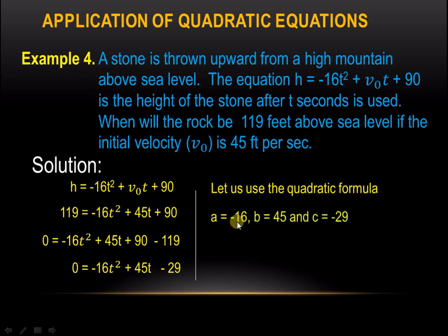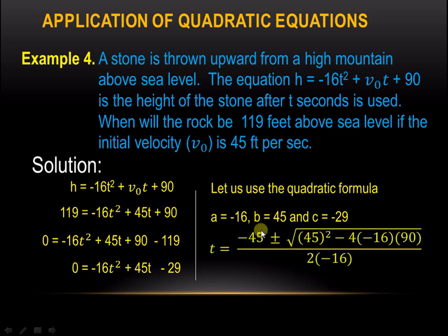Using the quadratic formula, we have t equals negative 45 plus or minus the square root of 45 squared minus 4 times negative 16 times negative 29, all over 2 times negative 16.